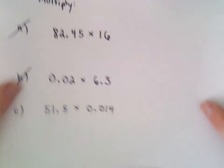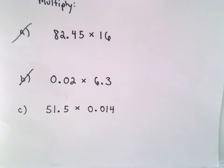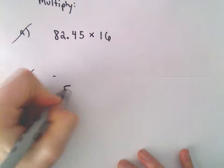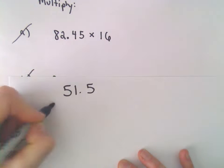All right, here we're going to look at one more example of multiplying decimals. So we're going to do 51.5 times 0.014.